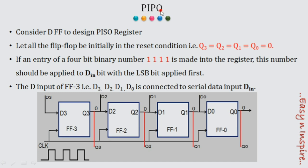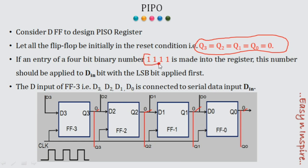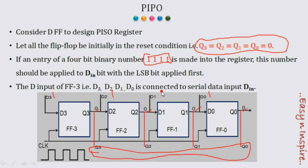For this parallel input parallel output register using D flip-flops, initially without any clock pulse the default outputs Q3, Q2, Q1, Q0 are all zero. D3, D2, D1, D0 are the input pins and Q3, Q2, Q1, Q0 are the output pins. I am going to enter four ones — one one one one — as input.